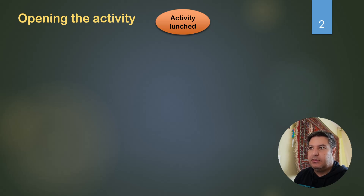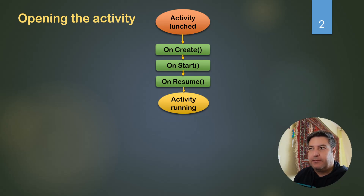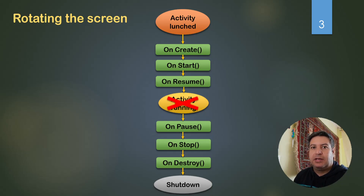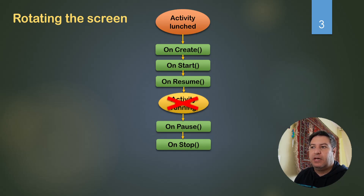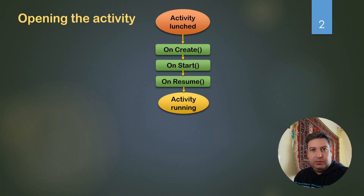When we are opening a new activity, the activity will launch, then the functions onCreate, onStart, and onResume will be called one by one, and finally we'll have a running activity. When we rotate the screen, this current activity will be destroyed — onPause, onStop, and finally onDestroy will be called. Then the rotation completes and again from the beginning, onCreate, onStart, and onResume run, giving us a running activity.